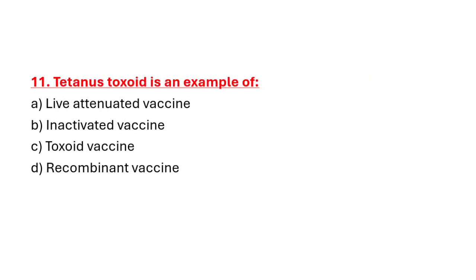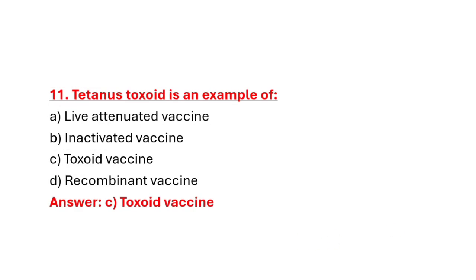Question 11: Tetanus Toxoid is an example of. Option A: Live attenuated vaccine. Option B: Inactivated vaccine. Option C: Toxoid vaccine. Option D: Recombinant vaccine. Correct answer is Option C: Toxoid vaccine.